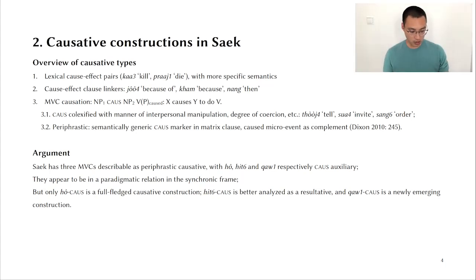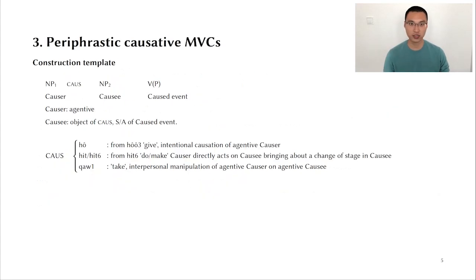So now I'm going to give a brief description of these constructions before I present my argument. Paraphrastic causative constructions, there are three markers possible that can be put in the slot. There's this hǎi which is identified with the lexical verb hǎi meaning to give, and the construction describes intentional causation of an agent of causer. The hít marker is identified with the lexical verb to do or to make, which conveys a situation in which the causer actively directly acts on the causee and brings about a change of state in the causee. And finally, ʔau is identified with the verb take, and the construction signals interpersonal manipulation of an agent of causer on an agent of causee.